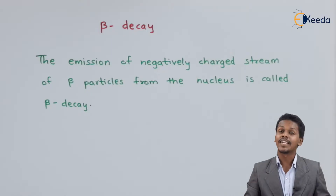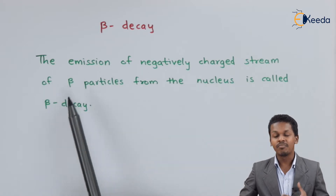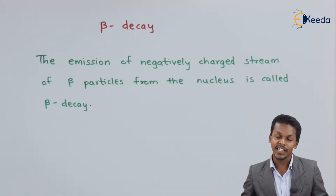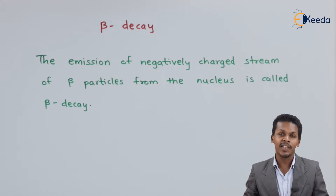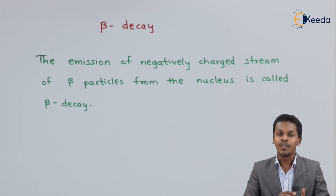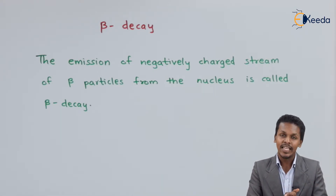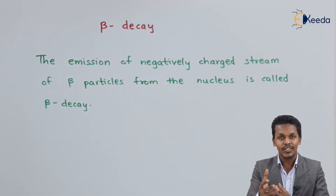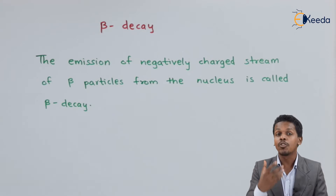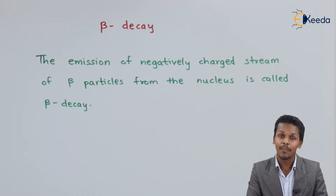Let us understand what is beta decay. The emission of a negatively charged stream of beta particles from the nucleus is called beta decay. Negatively charged particle means the stream of electrons. This electron has negligible mass, with a charge of minus 1, and it gets eliminated. But it can also increase the atomic number — let me talk about that with the help of an example.